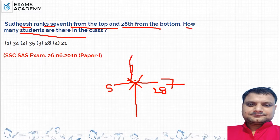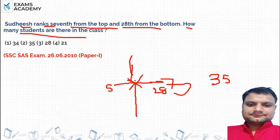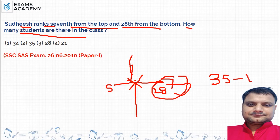Since the 7th rank from the top and 28th from the bottom are the same position, you add both ranks: 28 plus 7 is 35. But since both positions refer to the same person, you subtract 1 — so what will happen?